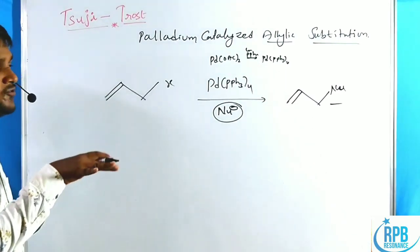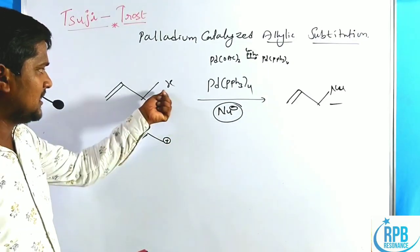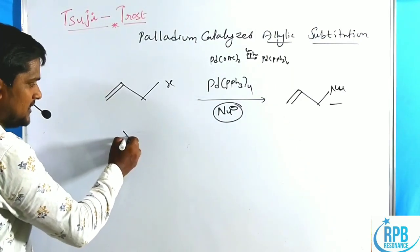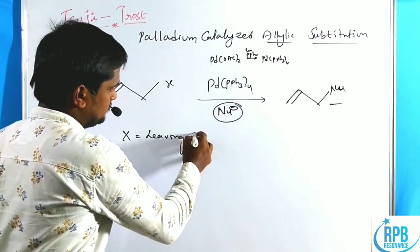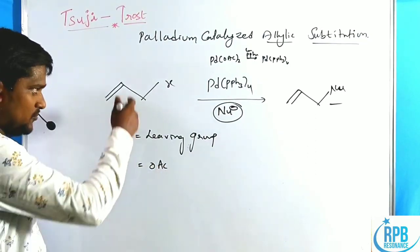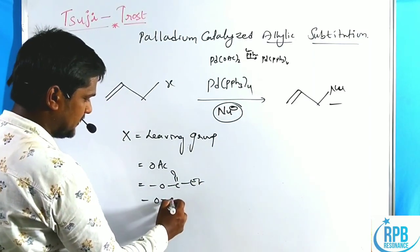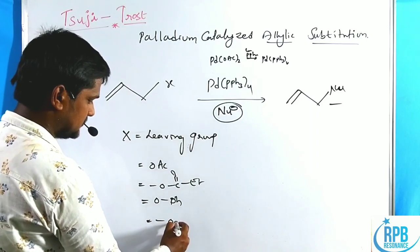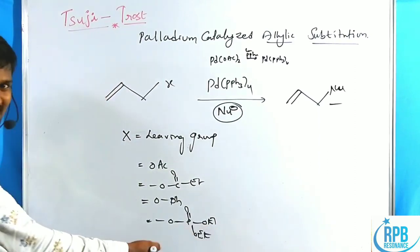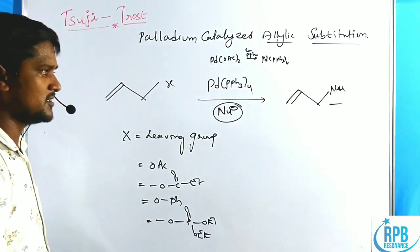The key feature of the Suji-Trost reaction is that it creates an allylic cation intermediate. Here X equals the leaving group. The best leaving group is OAc. Other leaving groups used include OAc, OCO-ethyl, O-phenyl, and phosphate esters such as O-P(=O)(OEt)2 or O-methyl. These types of groups are the leaving groups in the Suji-Trost reaction.